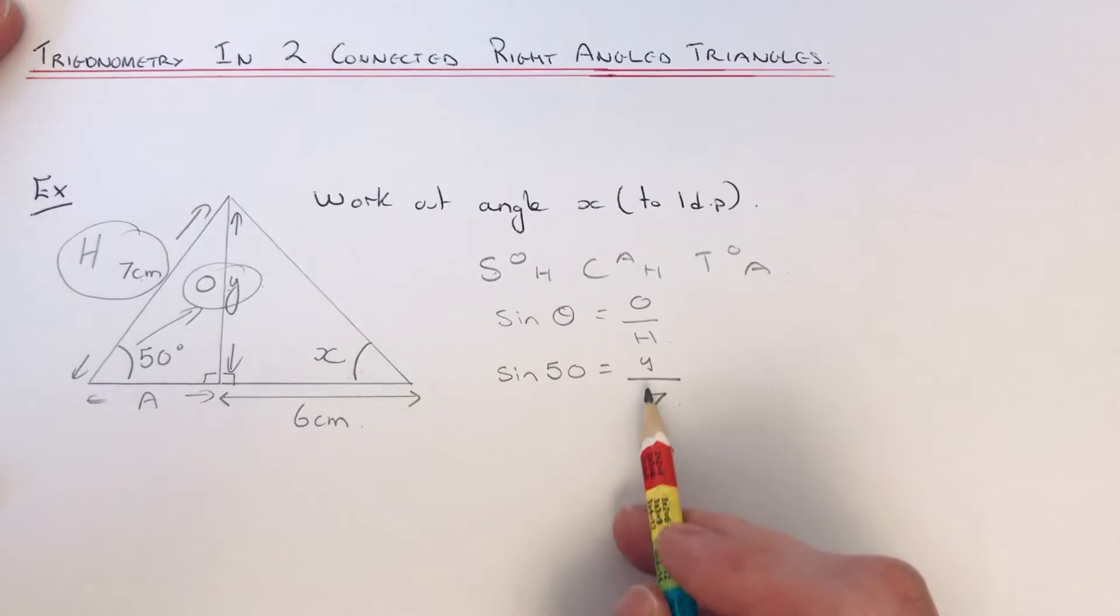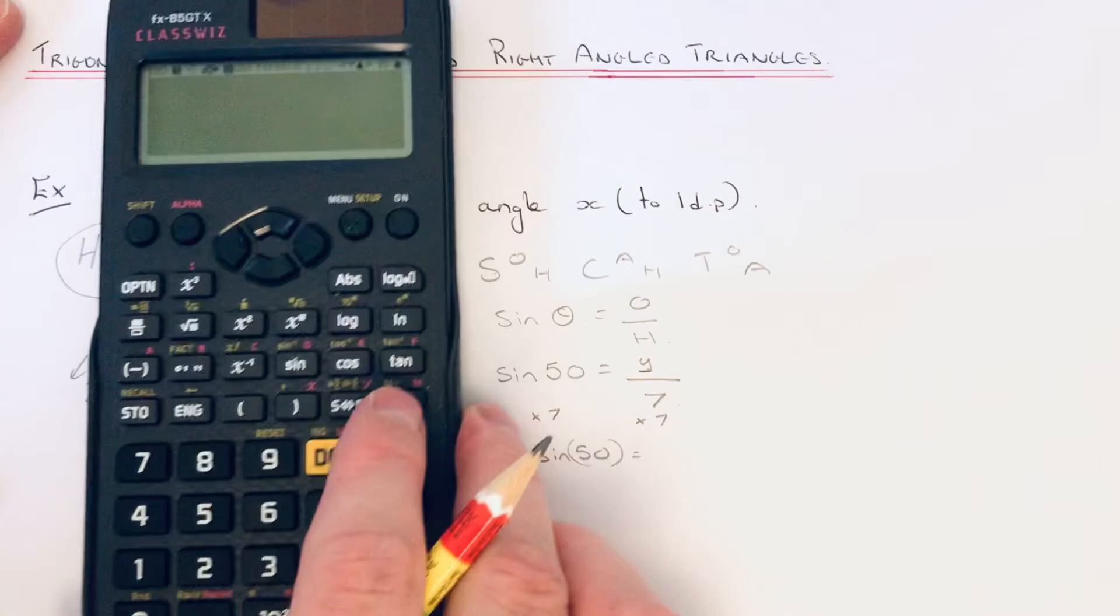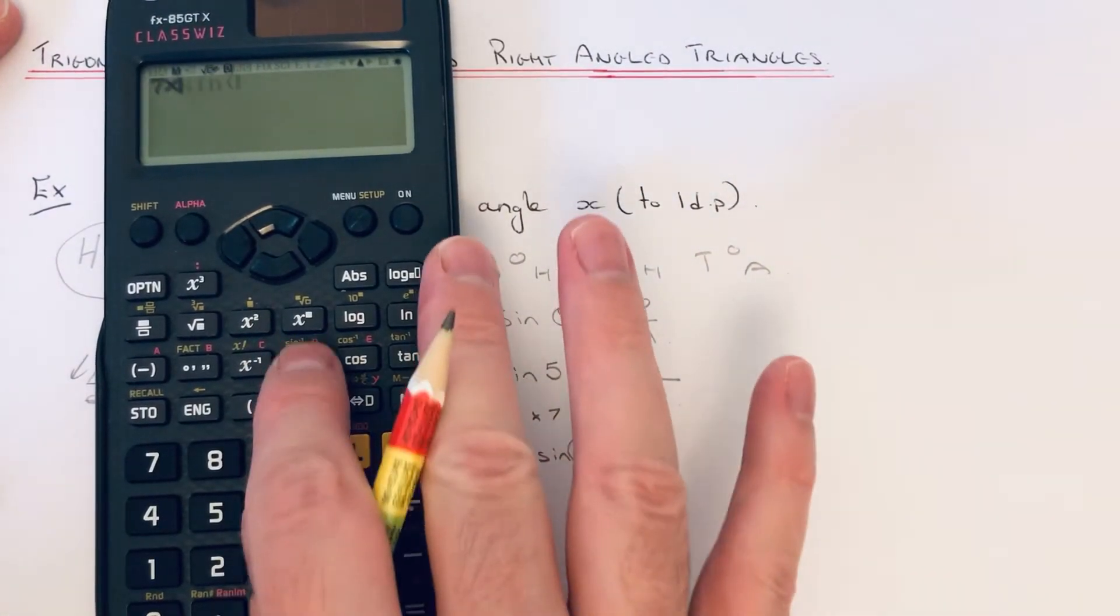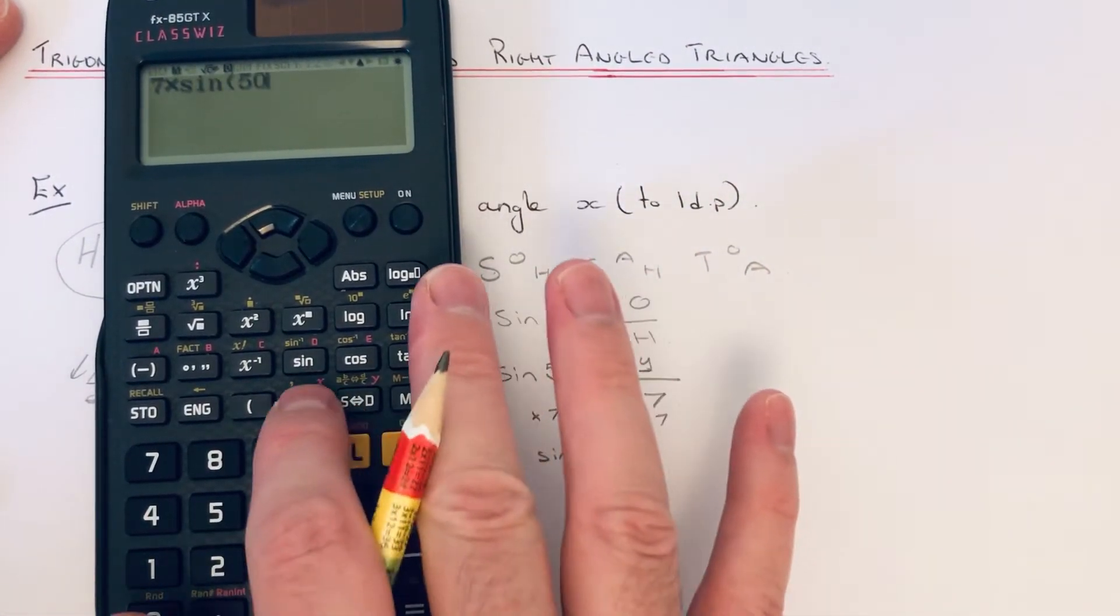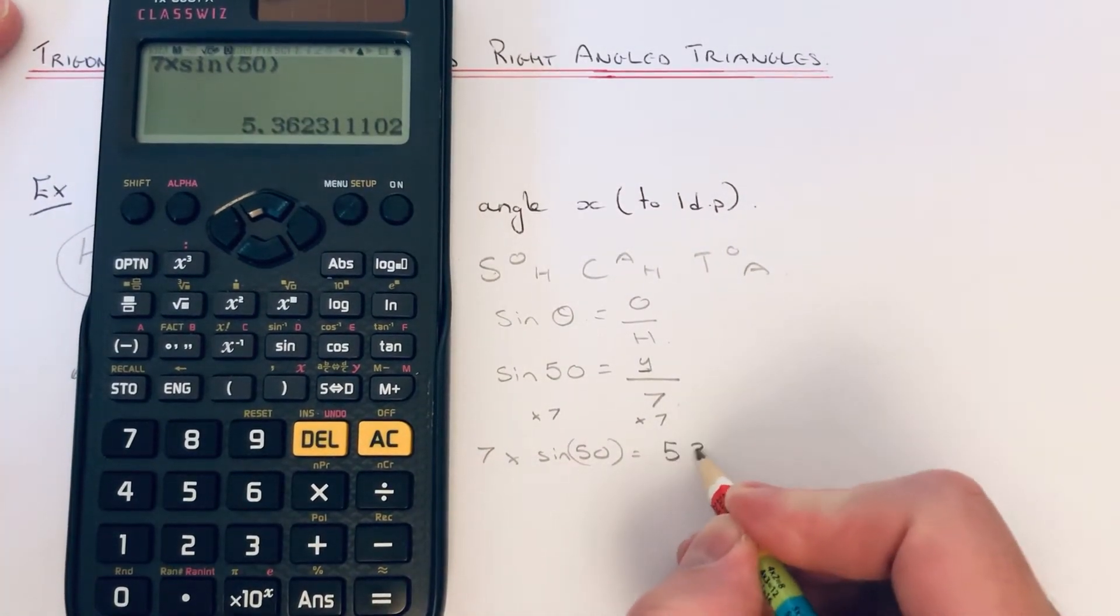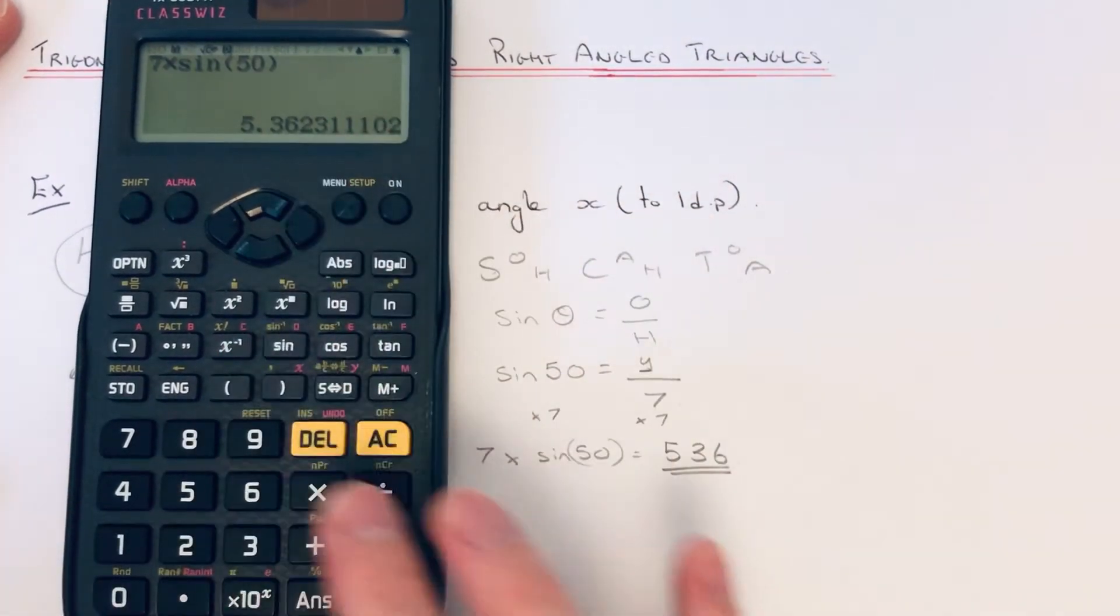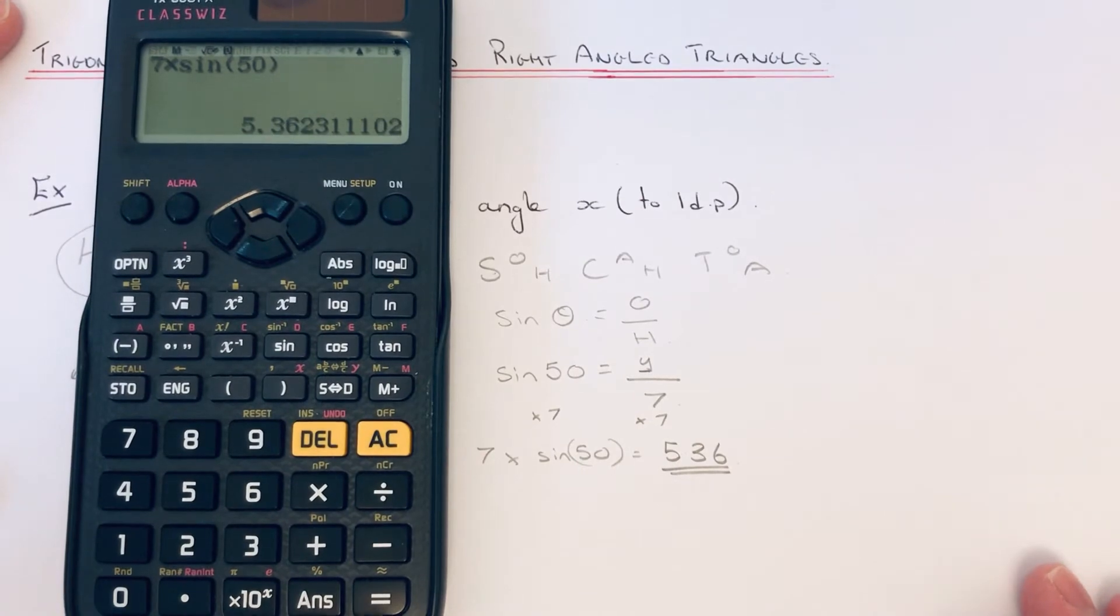To find side length Y, we just need to times both sides by 7, so Y would be 7 times sin 50. Seven times sin 50 gives 5.36, so we're going to keep this answer in the calculator's memory because we've got to use it again in a minute.